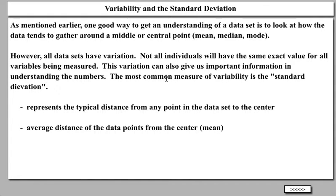Now I want to take a look at variability and a statistic called the standard deviation — I just want you to get a general concept of this; this is not a statistics course. One good way to understand a data set is to look at how the data tends to gather around a middle or central point — that's the mean, the median, and the mode. However, all data sets have variation; not all individuals will have the same exact value for all variables being measured. This variation — this difference in scores — can give us very important information about the number set. The most common statistic used is the standard deviation, and it represents the typical distance from any point in the data set to the center, or the average distance of data points from the mean.